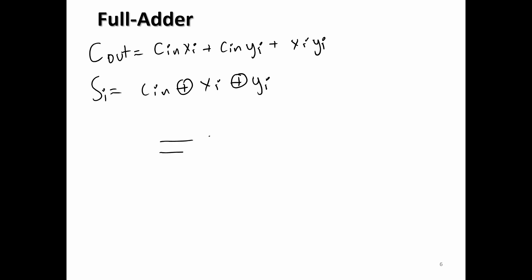So we're going to have 3 AND gates. Then an OR. That's going to be for c out. We're going to have c in, xi. Then we're going to have c in, yi. And then xi, yi.